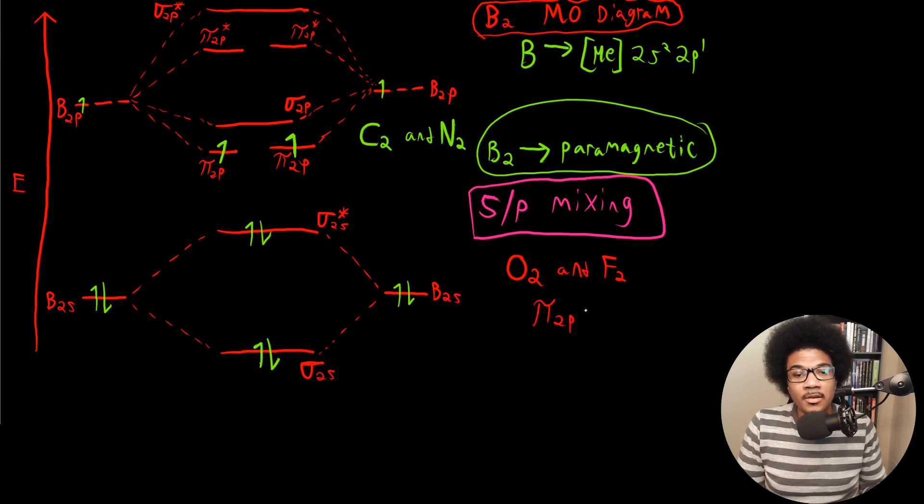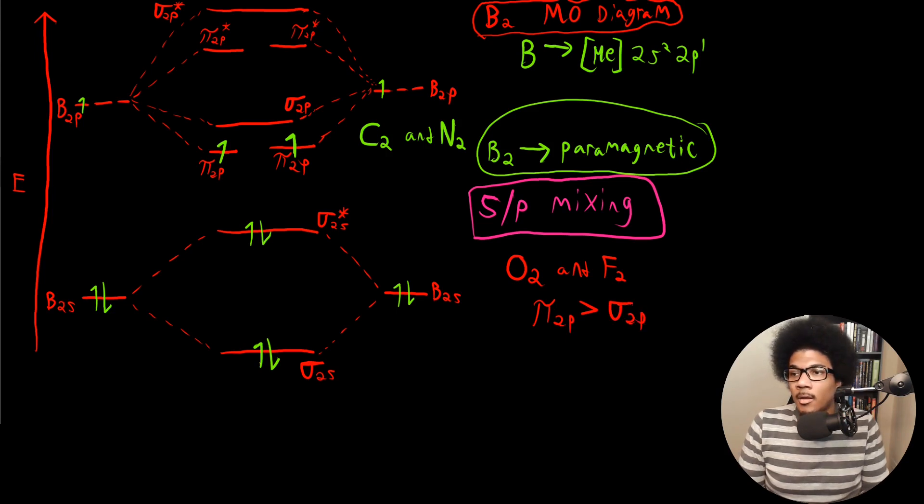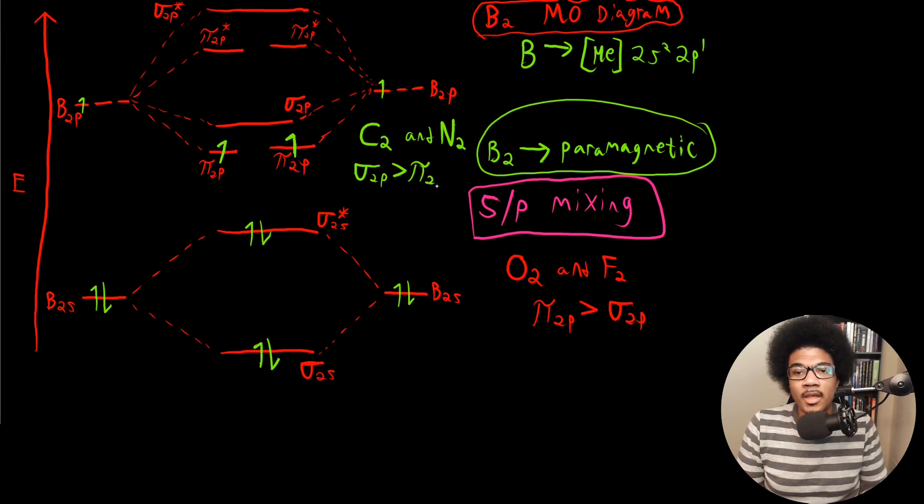But in C2 and N2 and B2, you're going to have the sigma 2P greater than the pi 2P. Everything else stays exactly the same. All the other orbitals remain unchanged. The SP mixing only affects these orbitals, the sigma 2P and the two pi 2P orbitals. So those are the only cases where you have to worry about this different ordering.